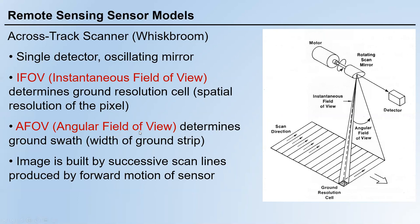We also have the angular field of view, or AFOV, which determines the ground swath — the width of the ground strip. Each scan line's length is the swath. An image is built by successive scan lines produced by the forward motion of the sensor, so objects on the ground are scanned line by line.